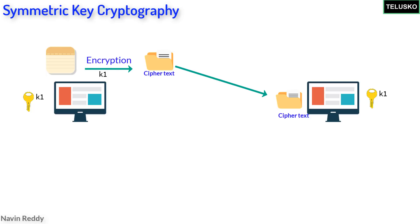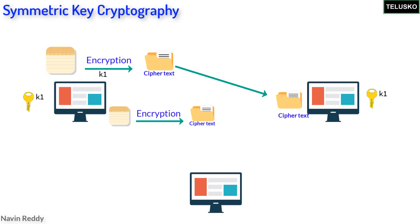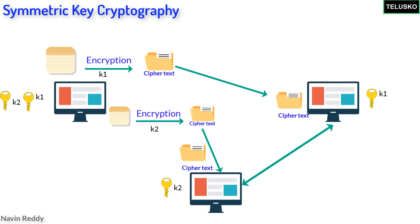Now let's say we also have A and C. If A wants to send a message to C, should A use K1? Of course not, because B has K1. So if A wants to send a message to C which should not be readable by anyone else, A will use a different key — let's call it K2. So between A and B we have K1, between A and C we have K2. If B and C want to interact, they can't use K1 or K2 — they will need a different key, K3.